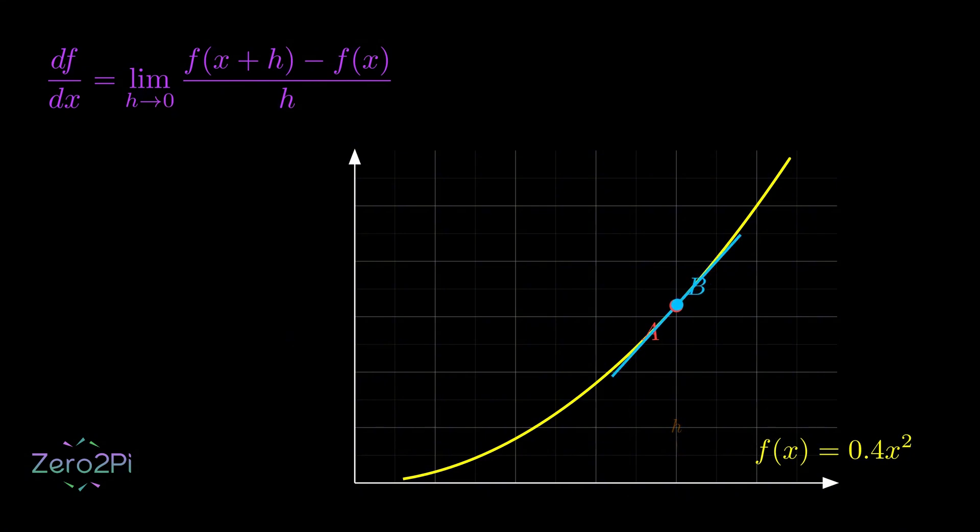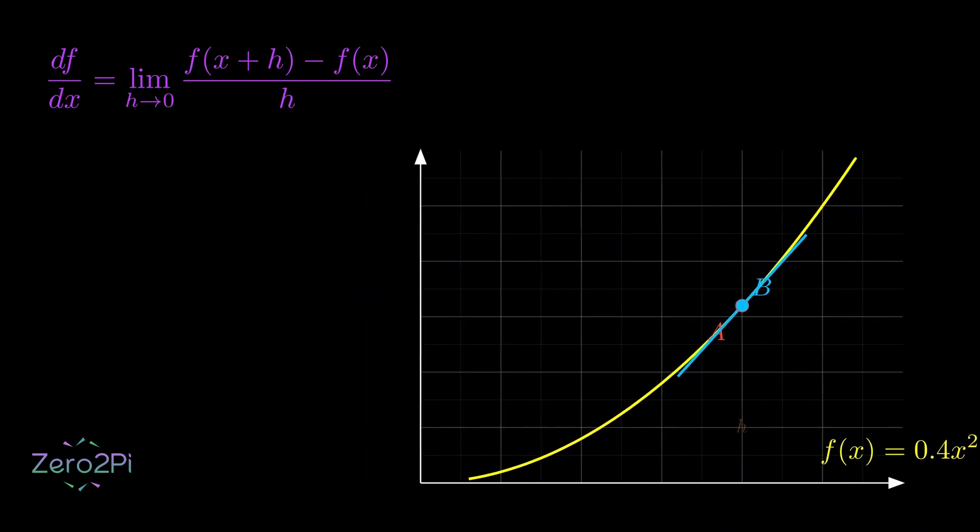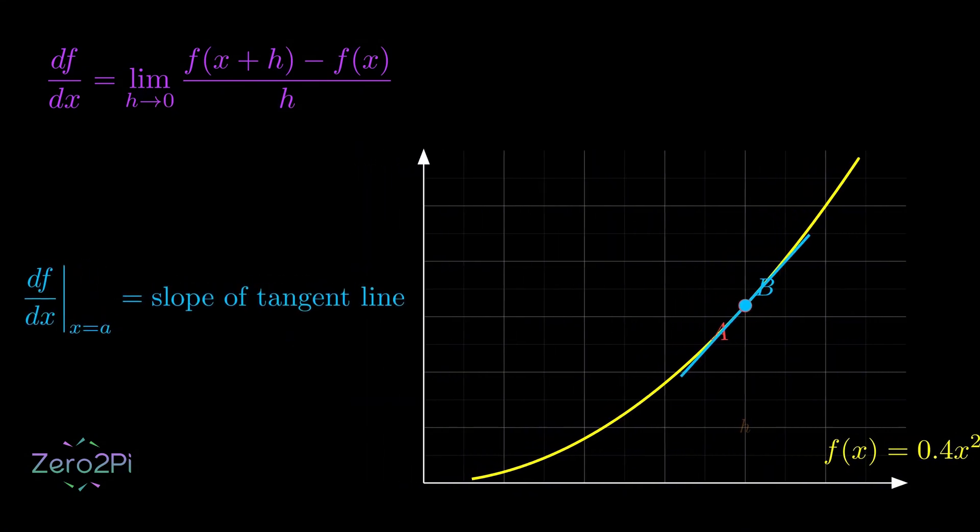When h gets practically close to zero, that secant line becomes the tangent line, and its slope isn't an approximation anymore. It's the instantaneous rate of change right at that single point. So we can say that the derivative at point a is the slope of that tangent line.